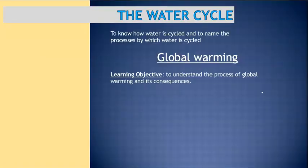A quick recap: the learning objective for the water cycle is to know how water is cycled and to name the processes by which water is cycled. Then we will move on to global warming, where your learning objective is to understand the process of global warming and its consequences. Make sure you've got those written down.